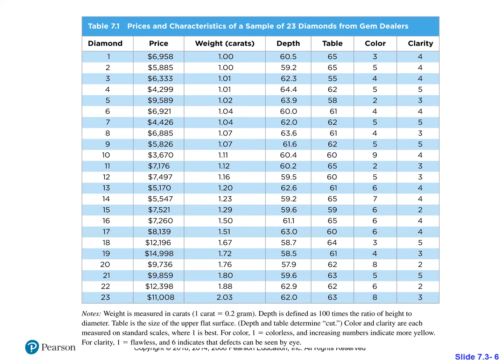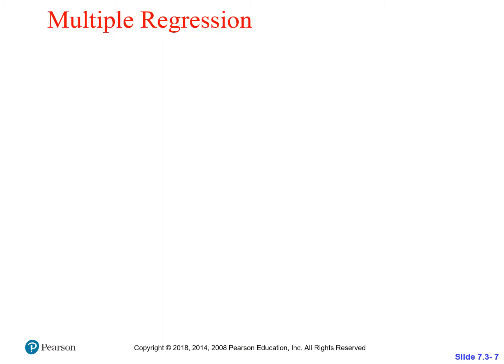Here is a table that we have seen before — the diamond table showing different correlations you can make with price, weight, depth, table, color, and clarity. This table reminds us that we can have many different variables. We noticed that price and weight had a decent correlation, but price and color didn't have a good correlation. If we could take all of those variables into account at once, we get what's on the next slide, which is a multiple regression.